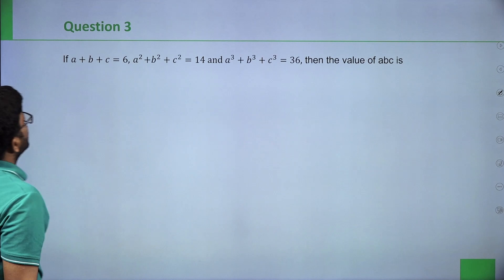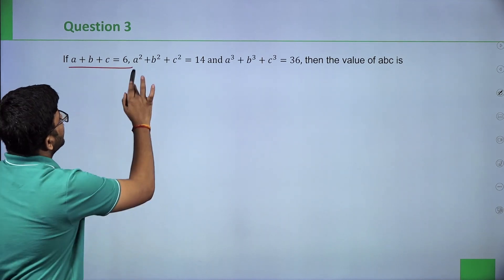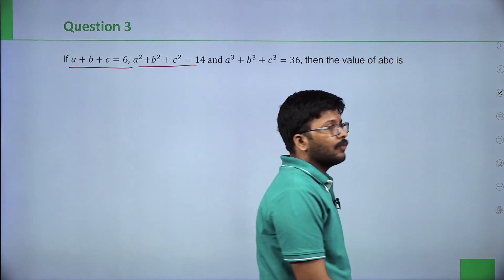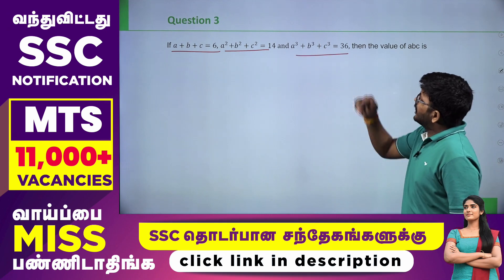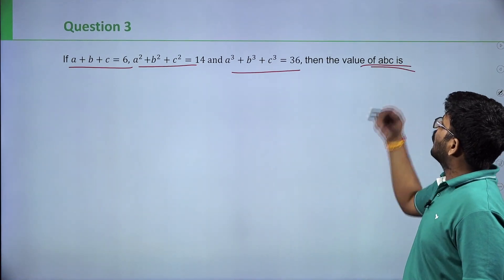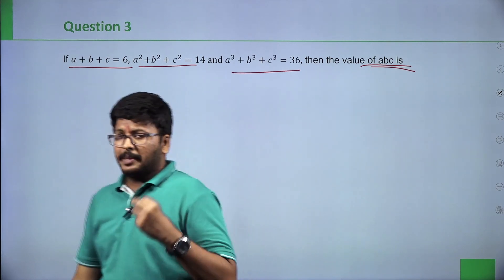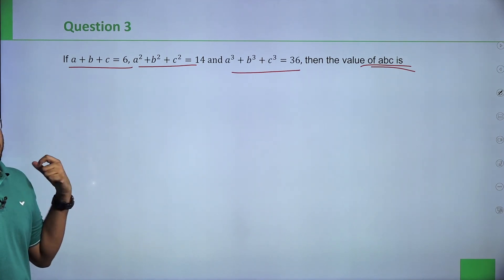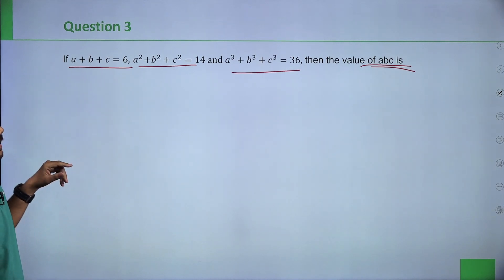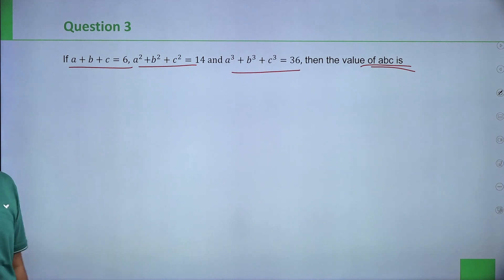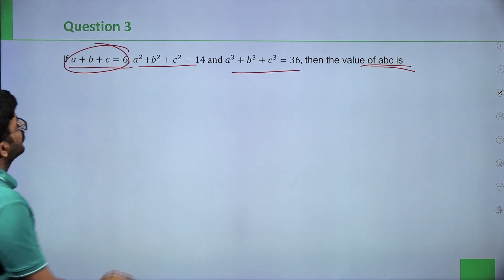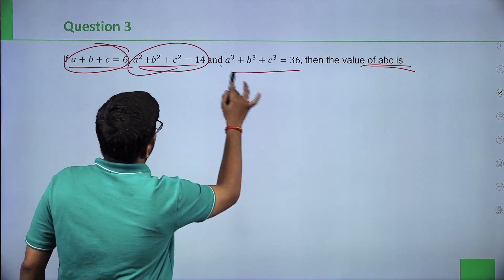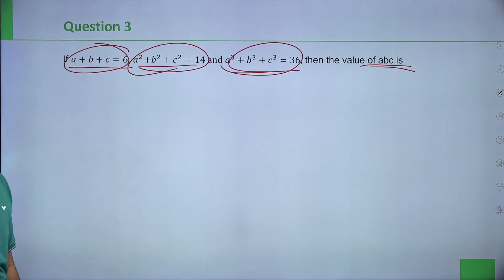Next question: if a plus b plus c equals 6, a square plus b square plus c square equals 14, and a cube plus b cube plus c cube equals 36, find the value of abc. We need 3 numbers that add to 6, whose squares add to 14, and whose cubes add to 36. Let's look at cubes: 1 cube is 1, 2 cube is 8, 3 cube is 27. So 1 plus 8 plus 27 equals 36 — that matches!